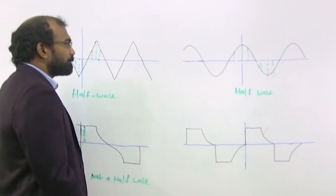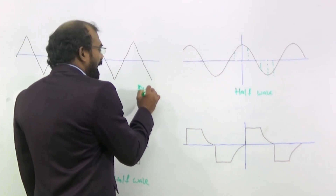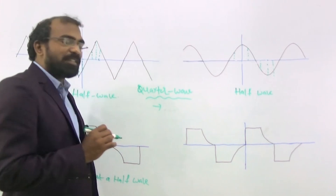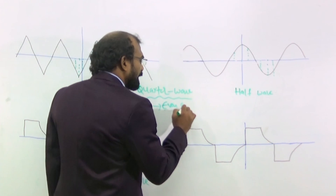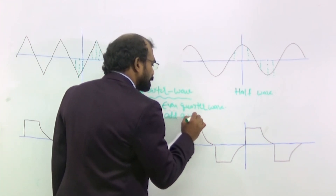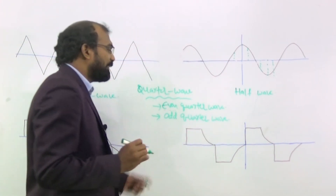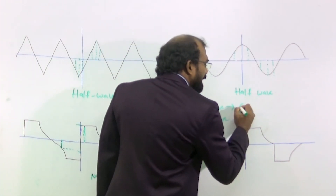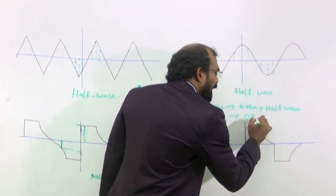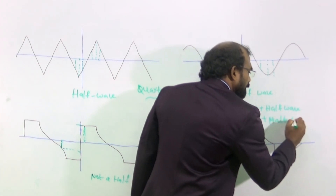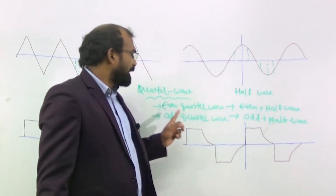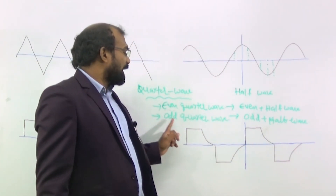Now I am defining a quarter wave. The definition of quarter wave — actually, quarter wave is classified into two types. The first one is even quarter wave and the second one is odd quarter wave. Even quarter wave is even plus half wave. And if it is odd and half wave, that will be odd quarter wave.